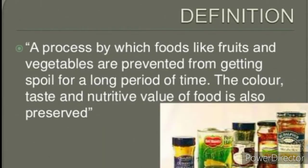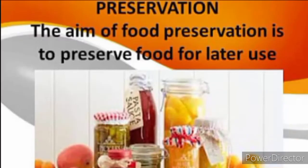Food preservation is a process by which foods like fruits and vegetables are prevented from getting spoiled for a long period of time. The color, taste, and nutritive value of food is also preserved. The aim of food preservation is to preserve food for later use.